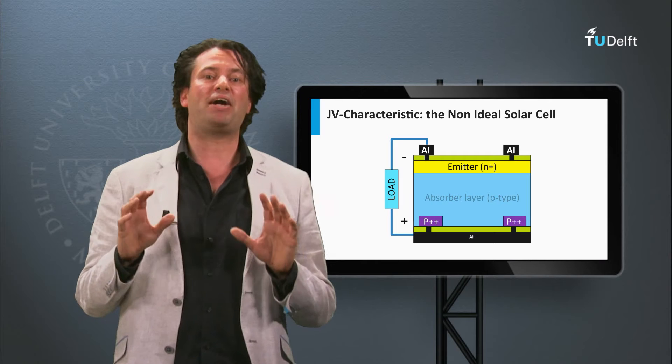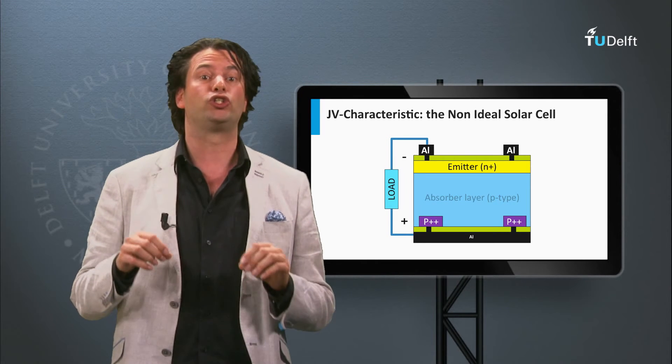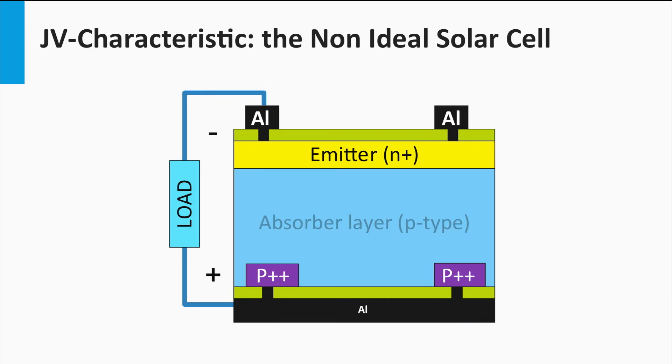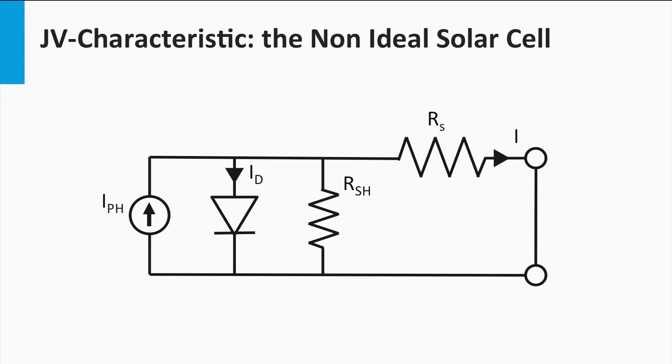The second resistance is the so-called parallel resistance, or also referred to as the shunt resistance. A shunt is a macroscopic defect in the solar cell which provides an alternative path for the generated photocurrent. Examples of a shunt are a crack through the semiconductor layers or a current path at the edge of the solar cell. In the electric circuit, the shunt resistance appears as a resistor connected in parallel with the current source and the diode. A low shunt resistance means that a large fraction of the photocurrent prefers to travel through the shunt. While a high shunt resistance means that less or no photocurrent is lost through the shunt.